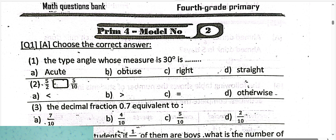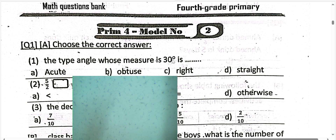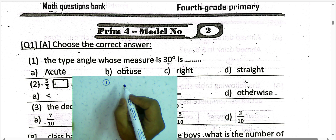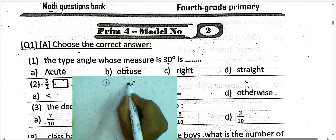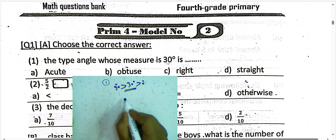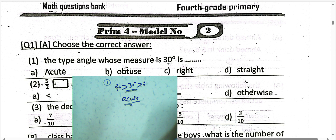Look at with me question number 1: choose the type of angle whose measure is 30 degrees. We call it acute angle, because the measure of 30 is greater than 0 and less than 90 degrees — it lies between them. We call it acute angle.